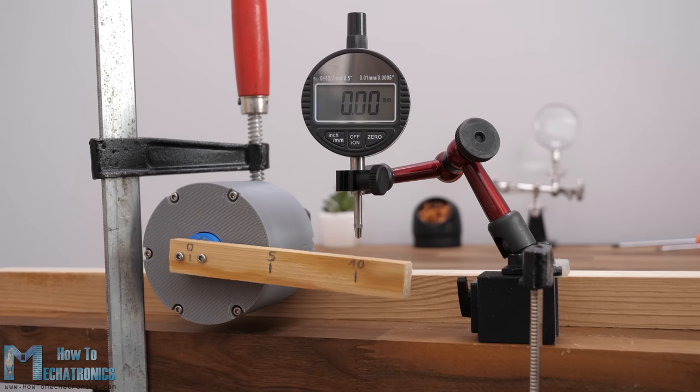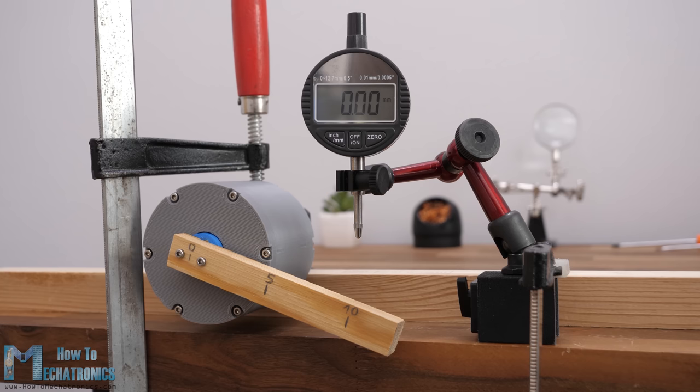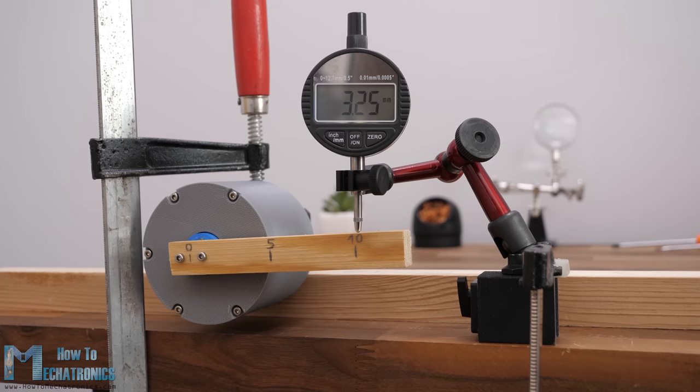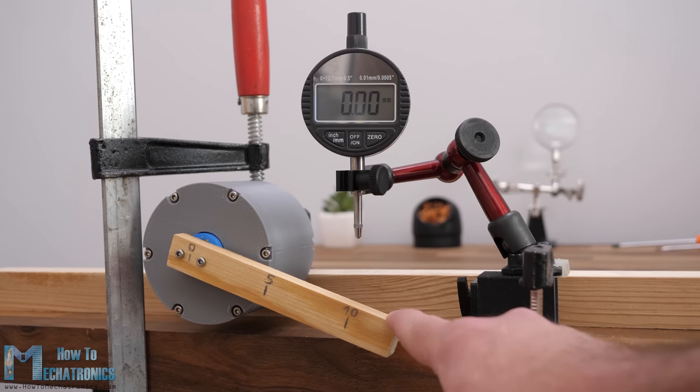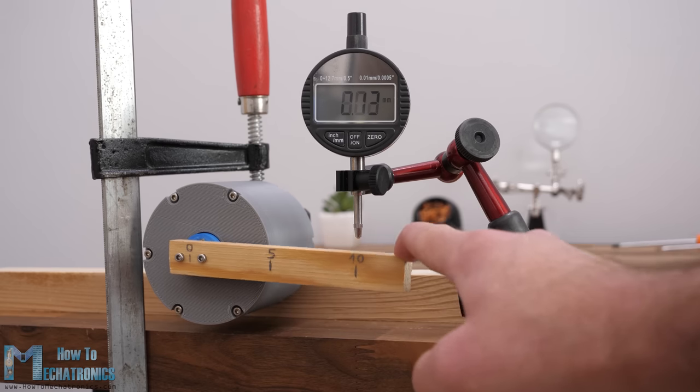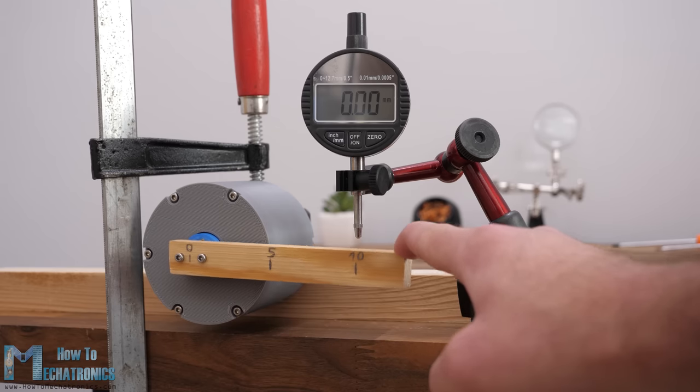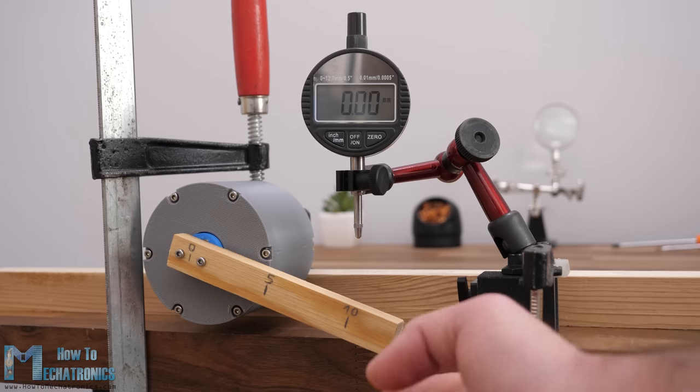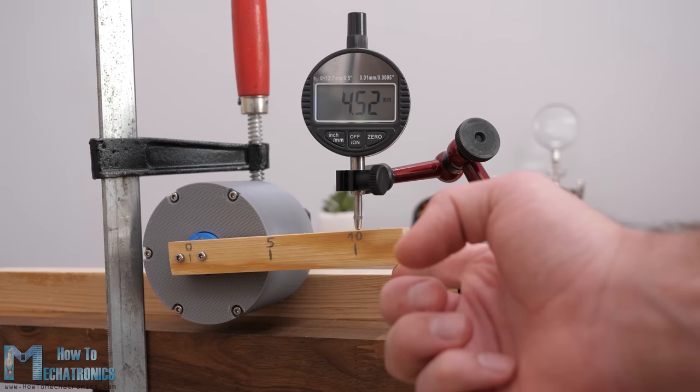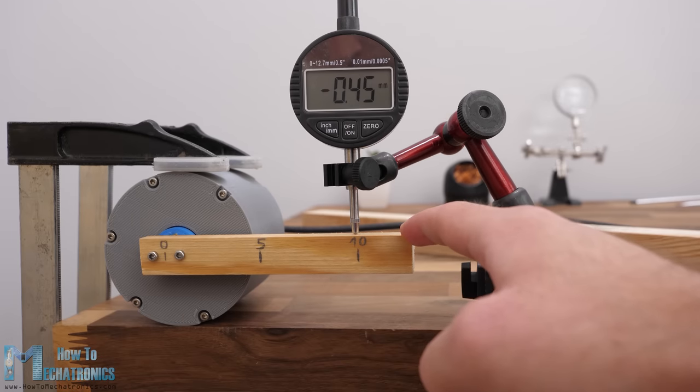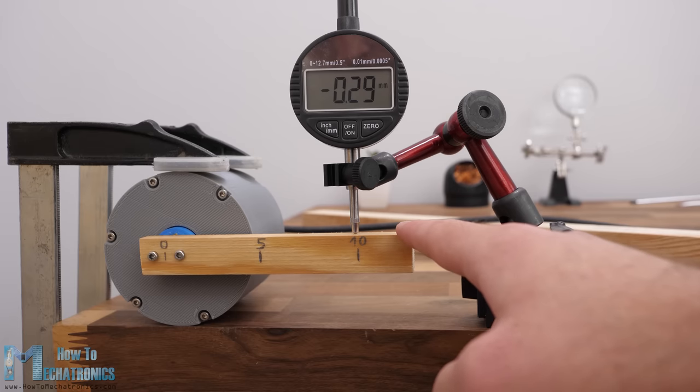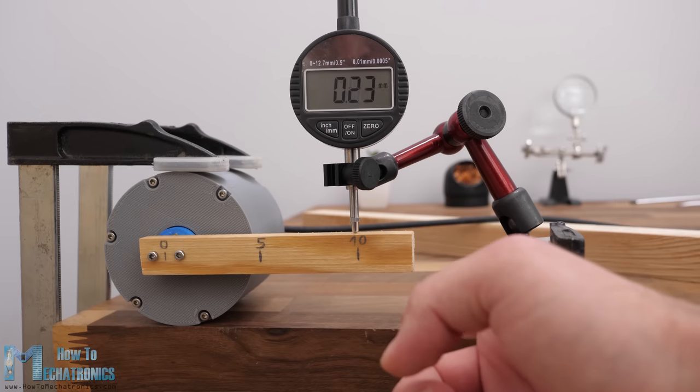Of course if we apply some force to the output we can notice some displacement. It was around 1.2 mm displacement in both directions. Actually even less than that when I clamped the gearbox itself rather than the stepper motor around 0.6 mm play in each direction.